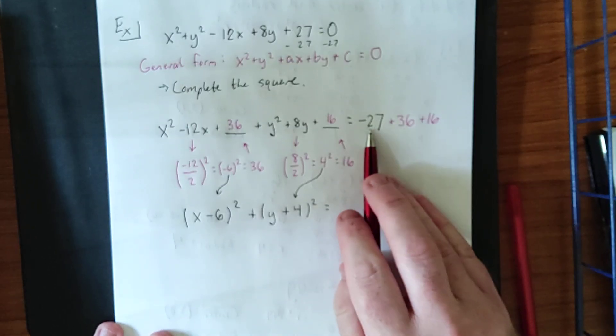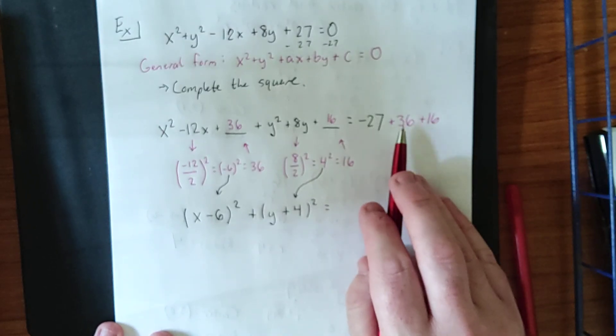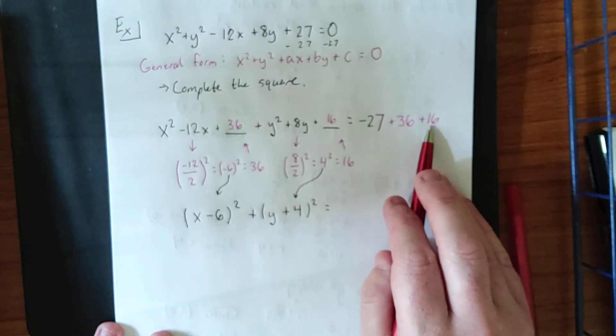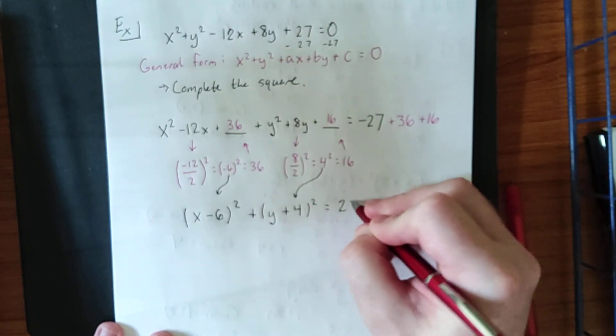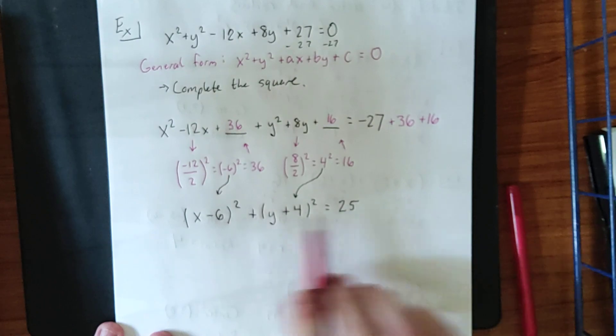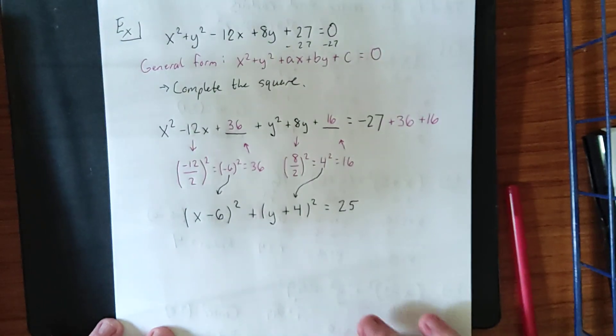On the right-hand side, if we take negative 27 plus 36, that's positive 9, plus an additional 16, that gives us 25. This is now standard form of our circle.